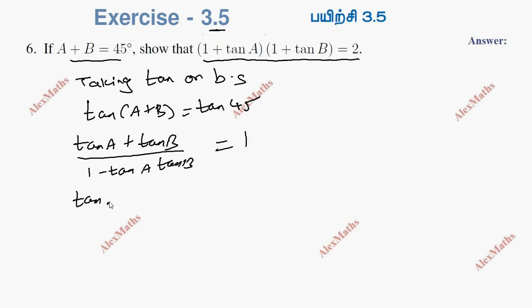If we do cross multiplication, tan a plus tan b equals 1 minus tan a·tan b. That is equal to 1, since tan 45 equals 1.